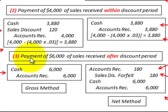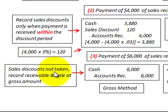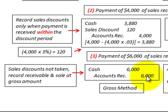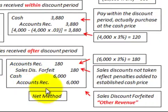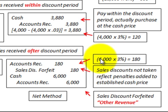Now let's look at the third situation: a payment of six thousand dollars received after the discount period. The buyer cannot take the discount. With the gross method, the sales discount is not taken since it was after the discount period. We increase cash for six thousand dollars and reduce accounts receivable for six thousand dollars. With the net method, we have a special account to consider — a three percent discount amount on the six thousand dollar payment: six thousand times three percent equals one hundred eighty dollars.